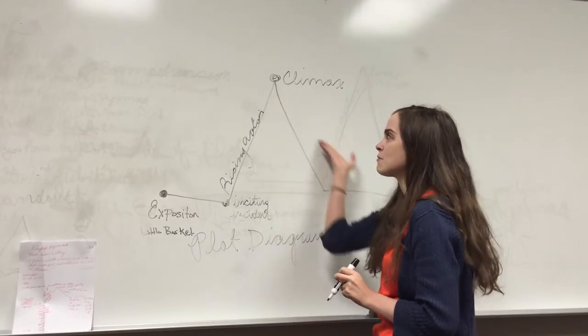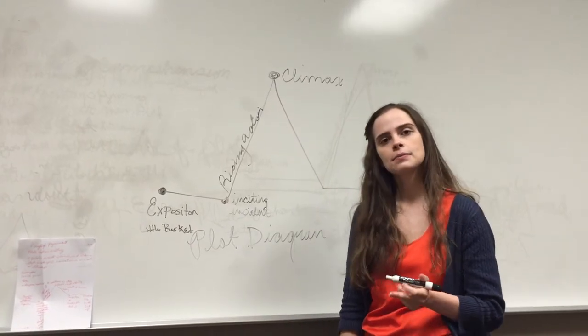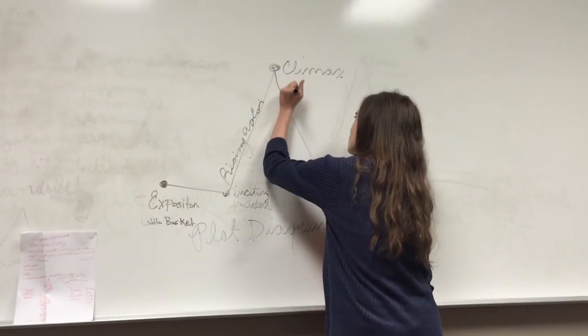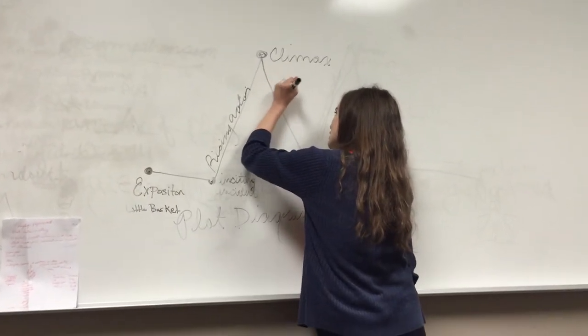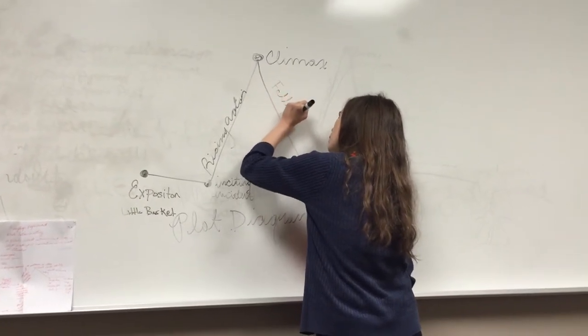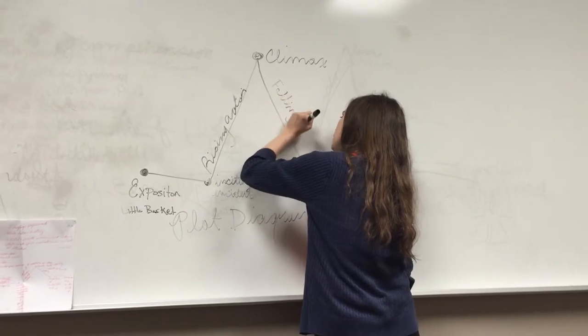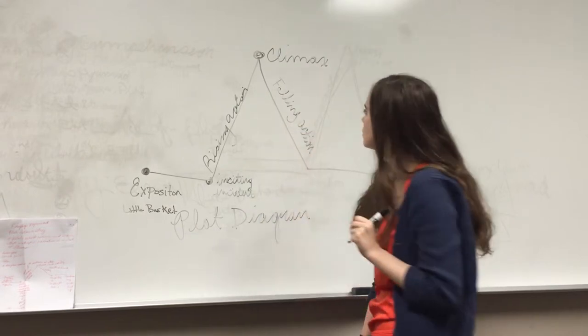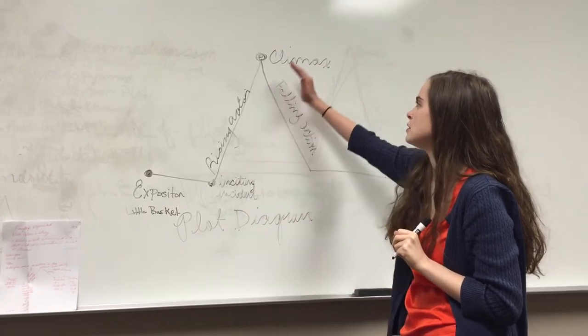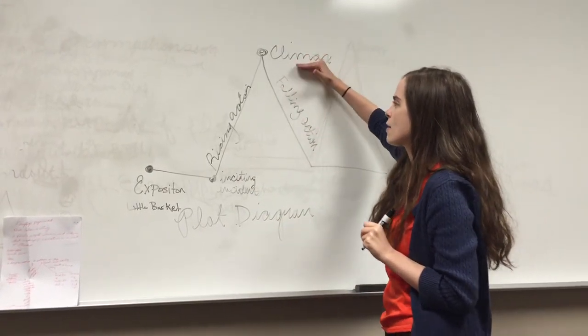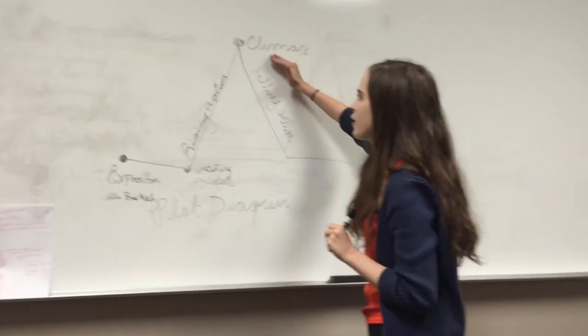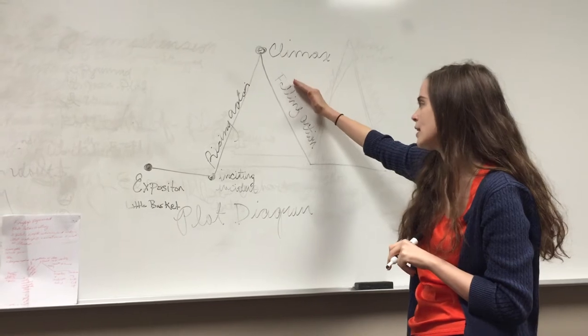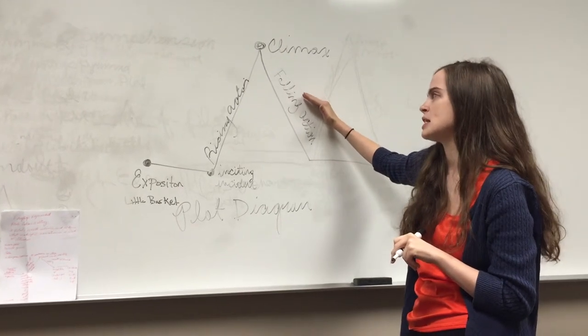What comes after the climax? The falling action. Right, the falling action. And what would the falling action be? Before the resolution. Right, before the resolution. So we've already, he's already there posing as the grandmother. And now all of these things start to happen and we start to come to a resolution.